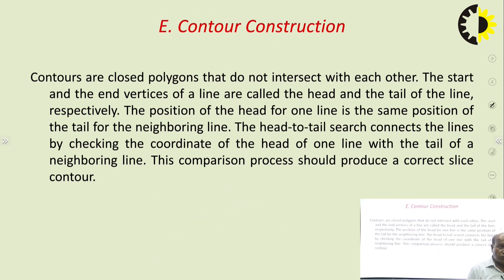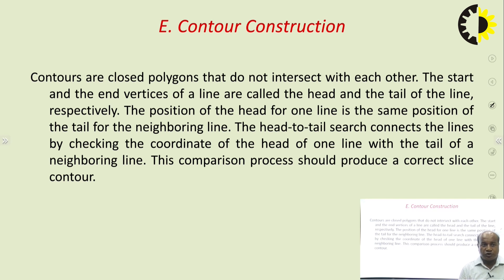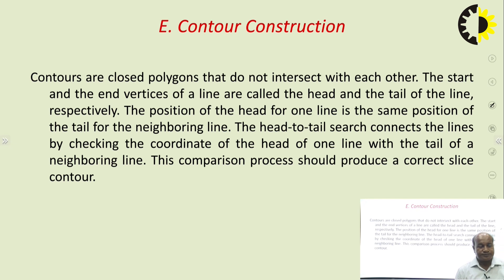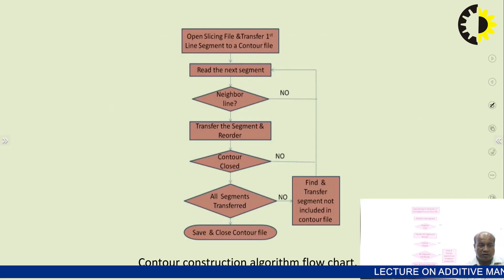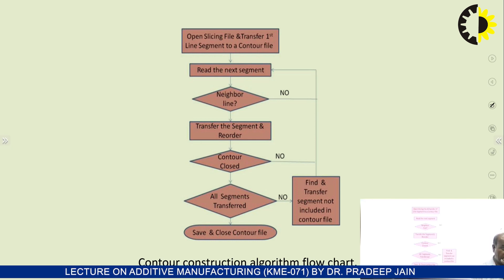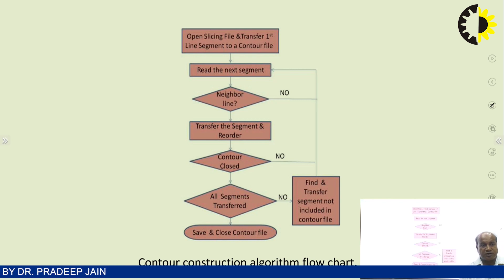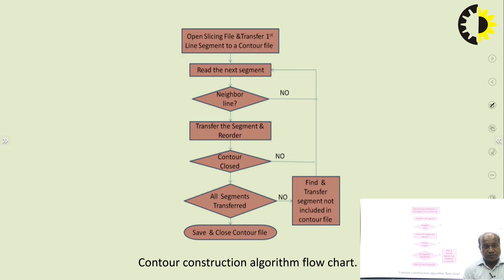We have to construct a contour. Contours are closed polygons that do not intersect with each other. The start and end vertices of a line are called the head and the tail of the line respectively. The position of the head of one line is the same as the position of the tail for the neighboring line. The head-to-tail search connects the lines by checking the coordinates of the head of one line with the tail of a neighboring line. This comparison process should produce a correct slice contour. The contour construction algorithm flowchart: open slicing file and transfer the first line segment to a contour file, then read the next segment, read the neighbor line, transfer the segment and re-order, until the contour is closed.